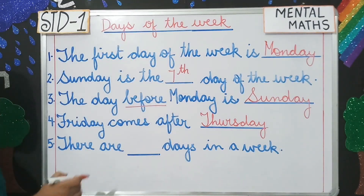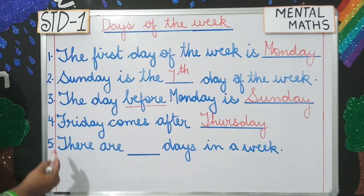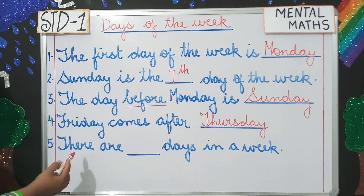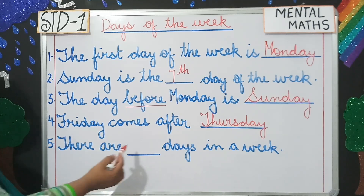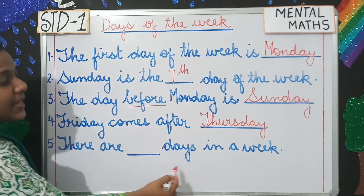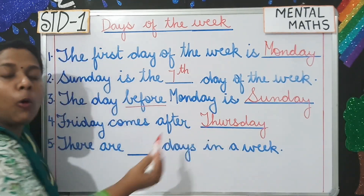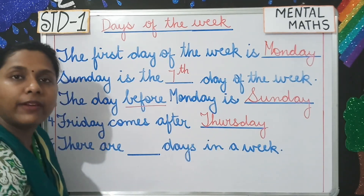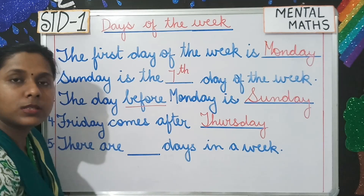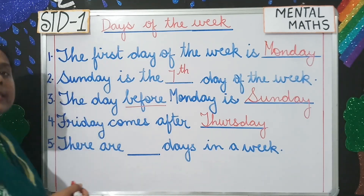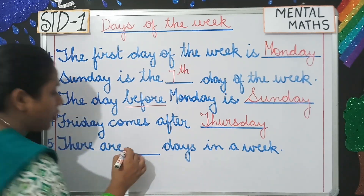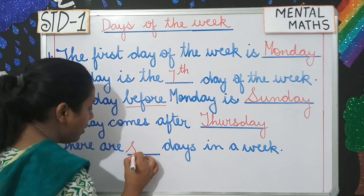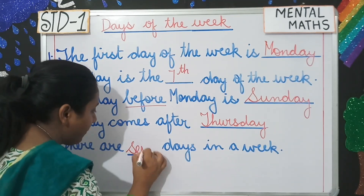Please do not make spelling mistakes. Number five: there are dash days in a week. How many days are there in a week students? There are seven days. So you will write here seven.